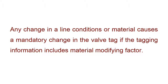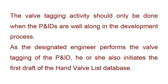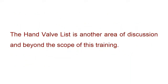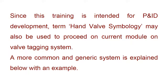Any change in the line conditions or material causes a mandatory change in the valve tag, if the tagging information includes a material modifying factor. The valve tagging activity should only be done when the P&IDs are well along in the development process. As the designated engineer performs the valve tagging of the P&ID, he or she also initiates the first draft of the hand valve list database. The hand valve list is another area of discussion and beyond the scope of this training.